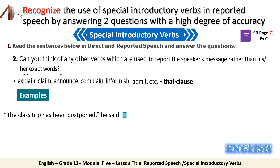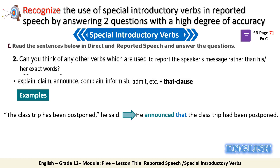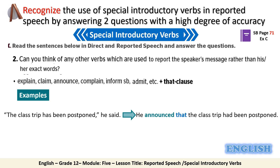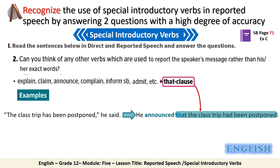Let's examine some examples. The first example: 'The class trip has been postponed,' he said. This sentence can be reported by writing: 'He announced that the class trip had been postponed.' Here the 'that' clause appears, and you notice that the verb form has been changed from the present perfect to the past perfect.